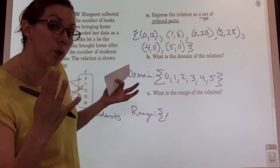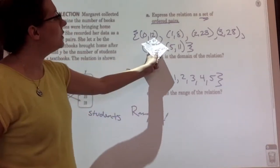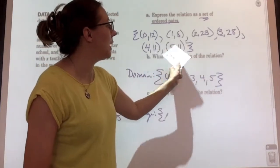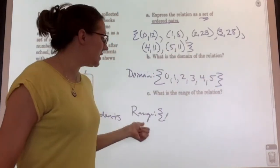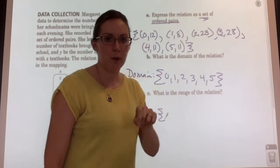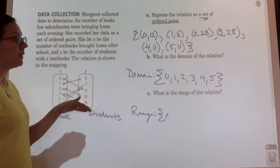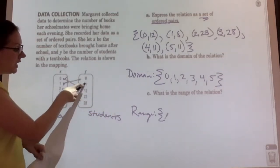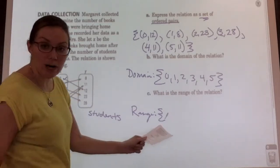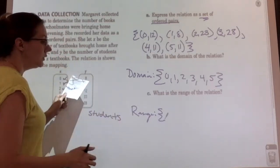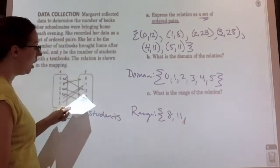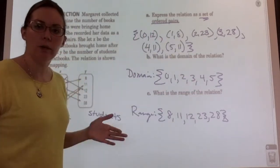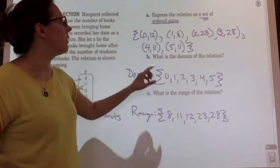They're already in order and there are no repeats, so I just list them separated by commas: 0, 1, 2, 3, 4, and 5, then close the curly bracket. For range, I do the same thing — range, colon, curly bracket — and list all my y values from least to greatest with no repeats. I notice that 11 appears twice in my coordinate pairs, but I only write it once. In the mapping the y values are already listed from least to greatest, so my range starts at 8.